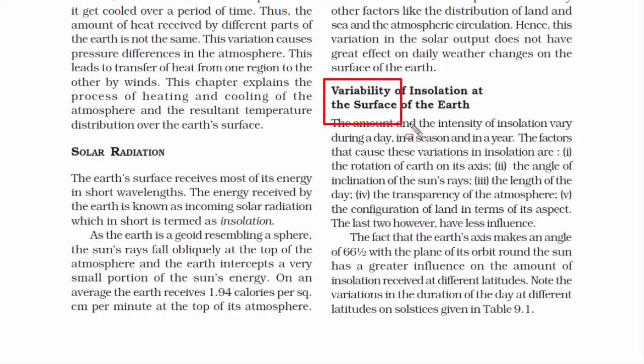Now we will read about the variability of insulation at the surface of the earth, meaning what changes does the incoming solar energy have on the surface? Here it says the amount and intensity of insulation varies during a day, in the season, and in a year. You don't feel very warm the entire day. Probably in the afternoon it gets very warm. Otherwise, in the morning and evening, it's fairly cool.